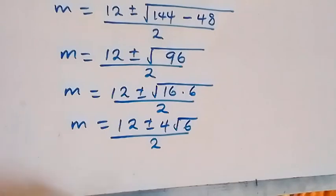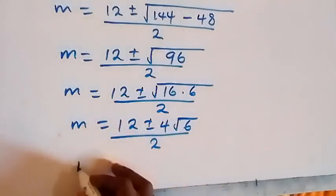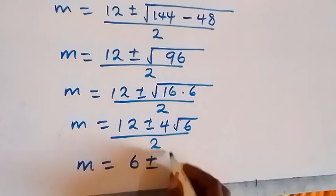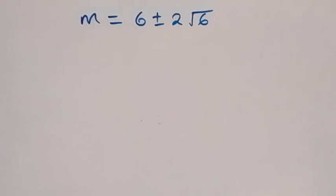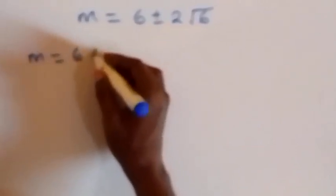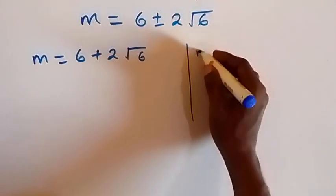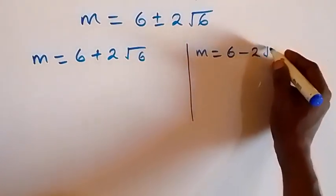Dividing through by 2 — 2 goes into 12 giving 6, and into 4 giving 2 — we have m equals 6 plus or minus 2 root 6.